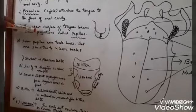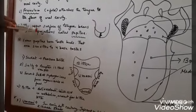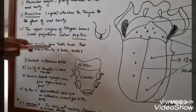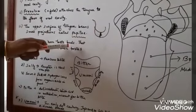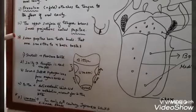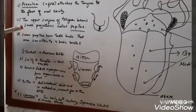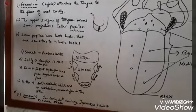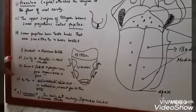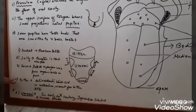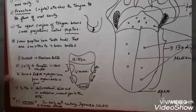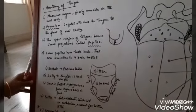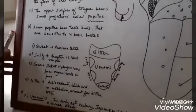The upper surface of the tongue has small projections — elevations — which are called papillae. Some of these papillae have taste buds. These taste buds help us to taste food. We have four different basic tastes, but I have written one more extra taste here which I will describe to you.